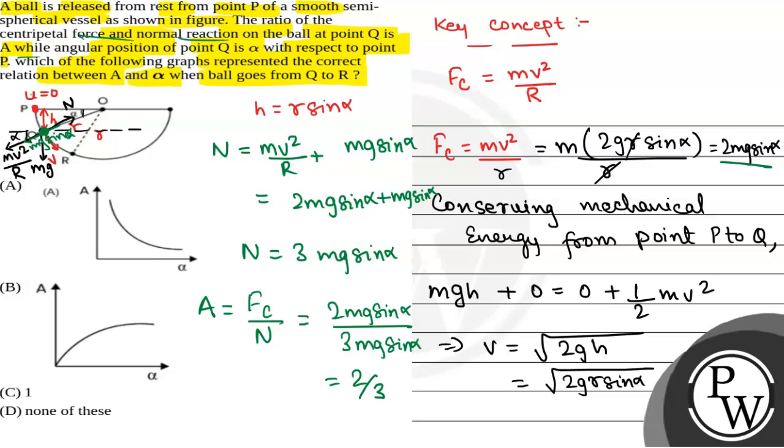As we can see that A is constant and does not vary with alpha, the graph of A with alpha will be a straight line and that will be a flat line. This is the graph of A with alpha. The correct option will be option D, none of these. This will be the answer.